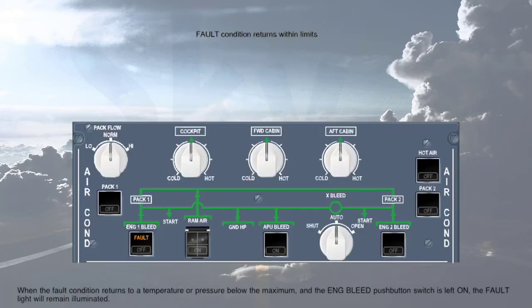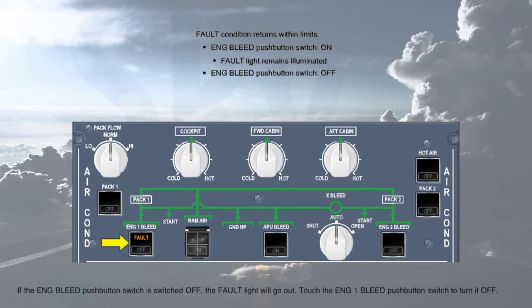When the fault condition returns to a temperature or pressure below the maximum and the engine bleed push-button switch is left on, the fault light will remain illuminated. If the engine bleed push-button switch is switched off, the fault light will go out. Touch the engine 1 bleed push-button switch to turn it off.